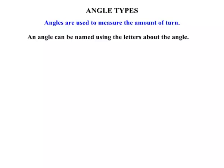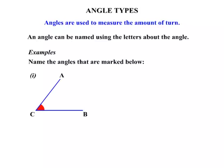Now, an angle can be named using the letters about the angle. So we've seen how to classify an angle. Now we'll see how to name an angle. Let's look at some examples. We're asked to name the angles that are marked below. There's a first one there.